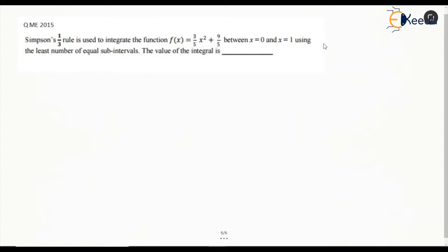It says Simpson's one-third rule is used to integrate the function f between x equal to 0 and 1, least number of equal sub-intervals.